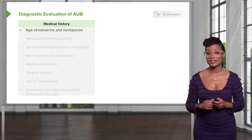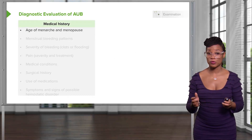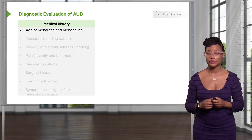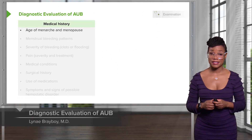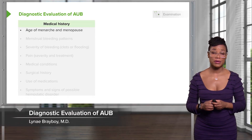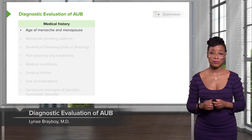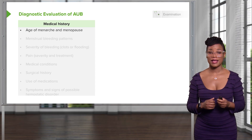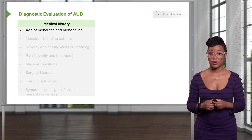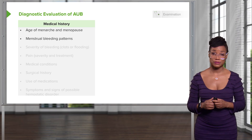Let's now talk about the diagnostic evaluation of abnormal uterine bleeding. First, you want to ask them what the age of menarche was, and if they've already had menopause, when that was. The average age for menarche is 12, while it's 51.4 for menopause.